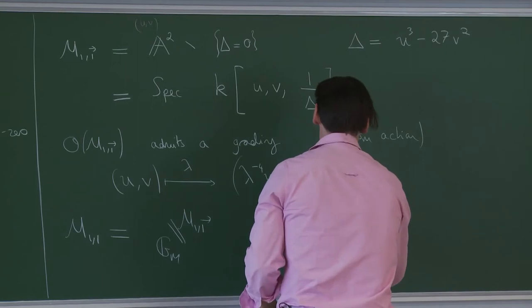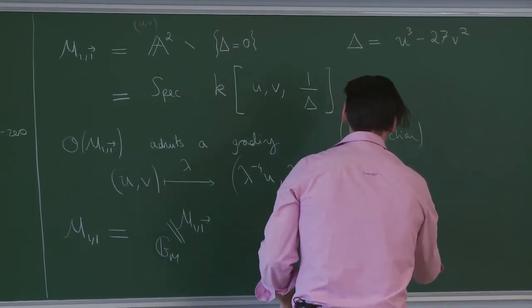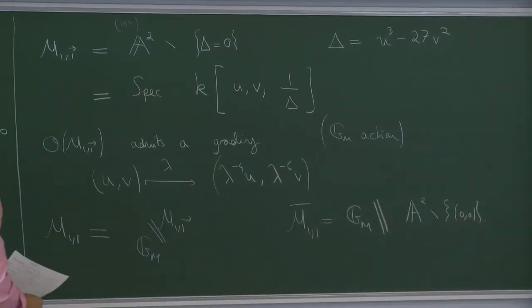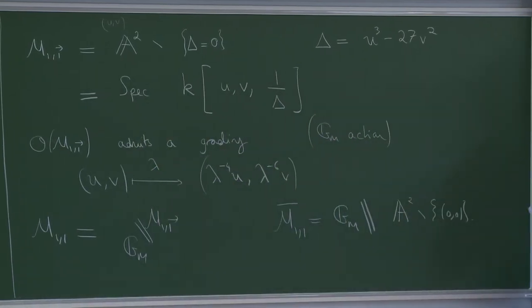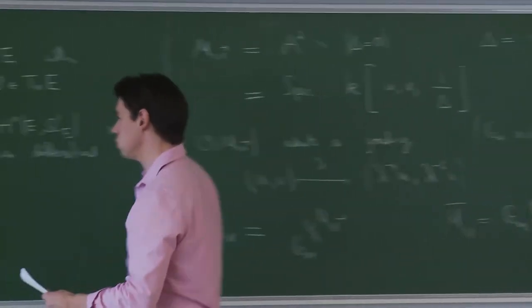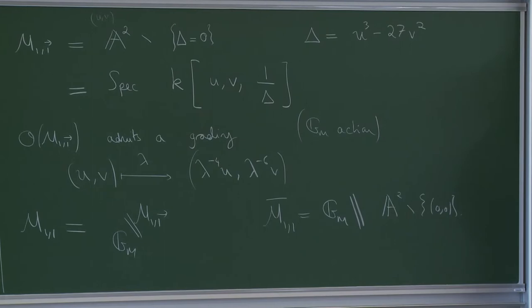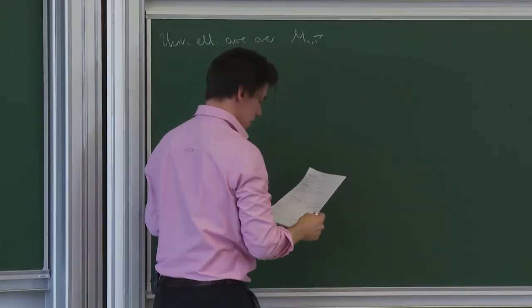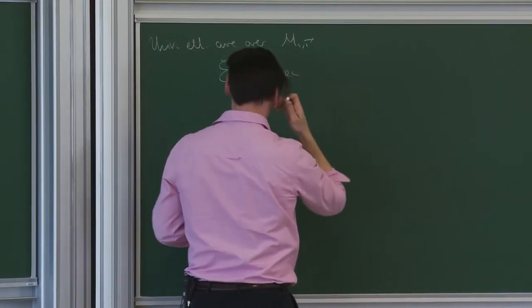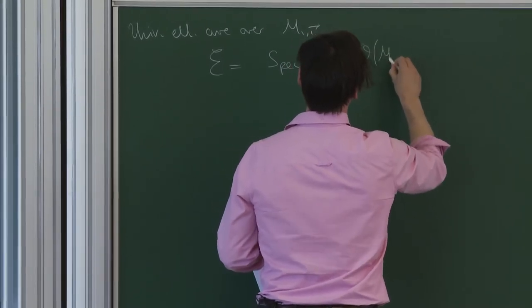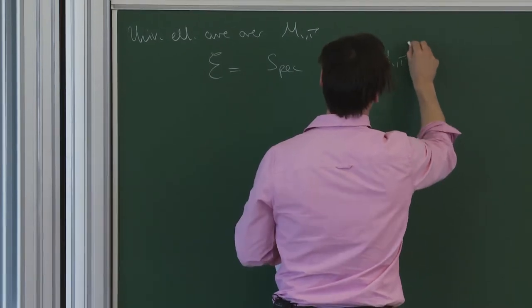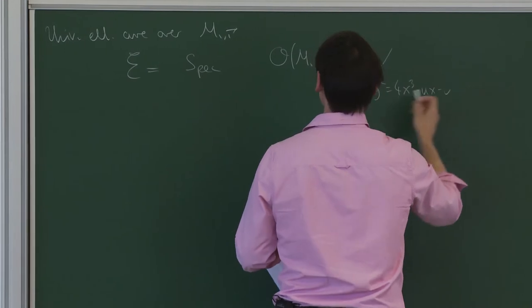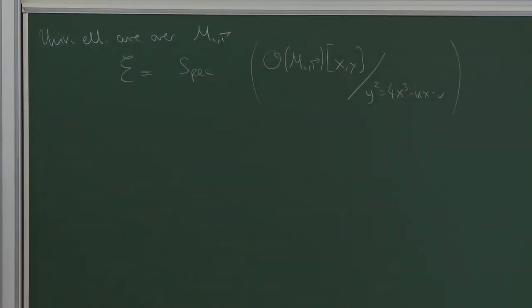The Deligne-Mumford compactification, which we won't need today, is just the G_m quotient of A2 minus the origin. The universal elliptic curve over M1-vector-1 is very explicit: it's just spec of the ring O_{M1-vector-1} adjoined x, y modulo the equation y squared equals 4x cubed minus ux minus v.